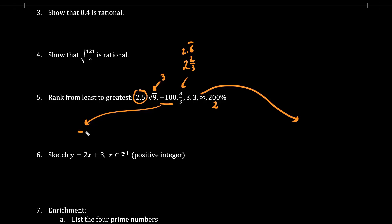So we write negative 100 as the smallest. Next we have 2 or 200%. Next we have 2.5. We have 2.6 repeater or 8 over 3. Then we have 3 or the square root of 9. Then we have 3.3 repeater. And finally infinity. This here is the order from least to greatest.